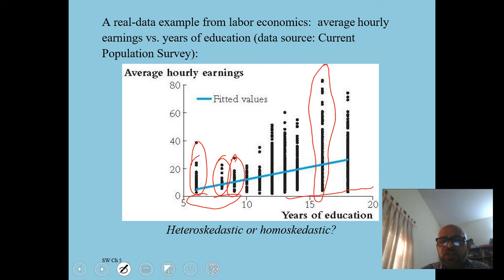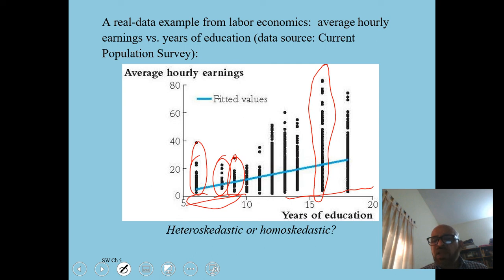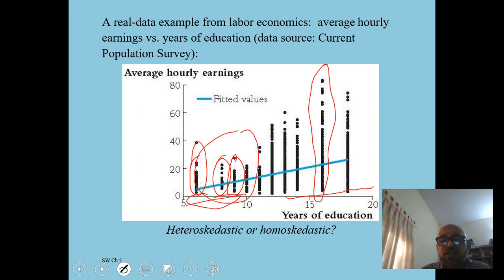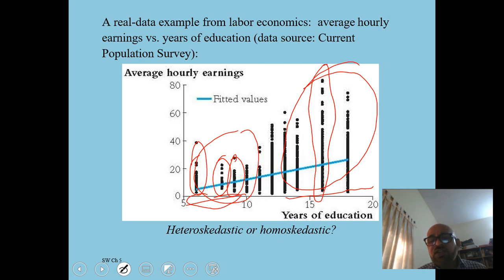People with only 6 or 8 years of education earn very similar amounts to each other, but people with 16 years of education show huge variation — some may reach CEO level at a large firm, others may be in casual normal jobs. So variance clearly increases with years of education, making this data heteroscedastic.